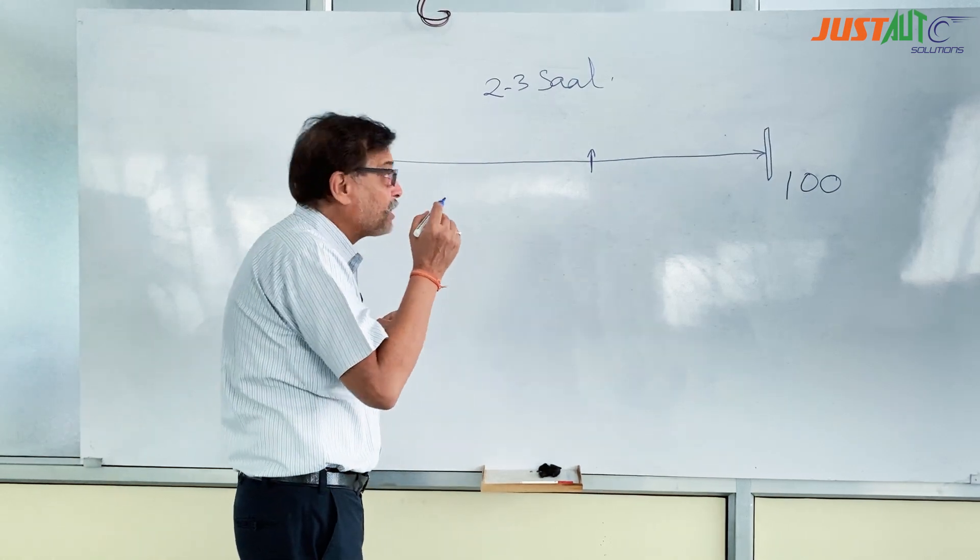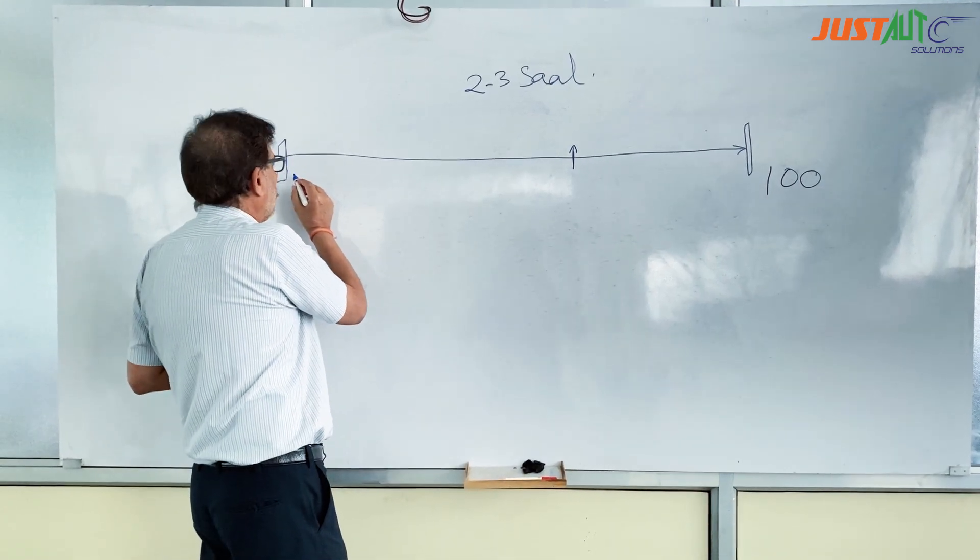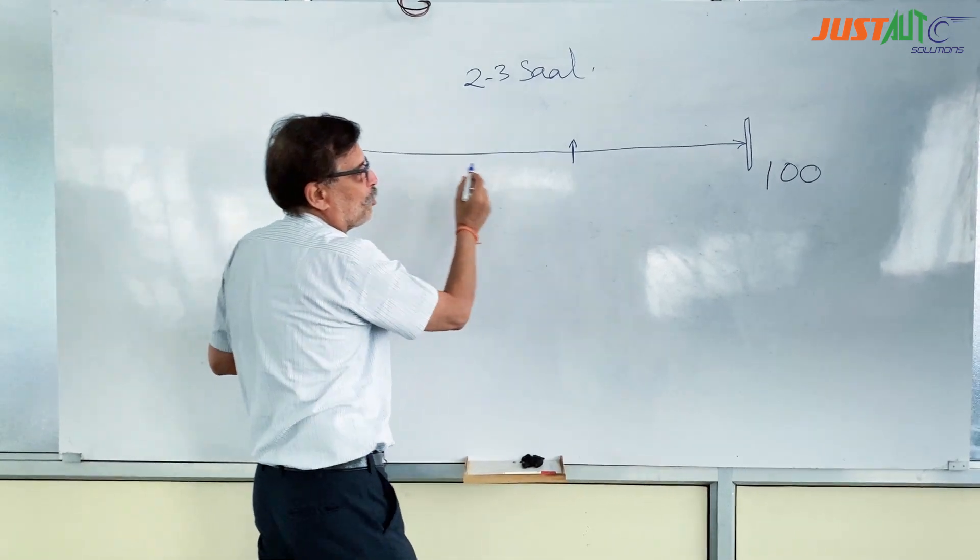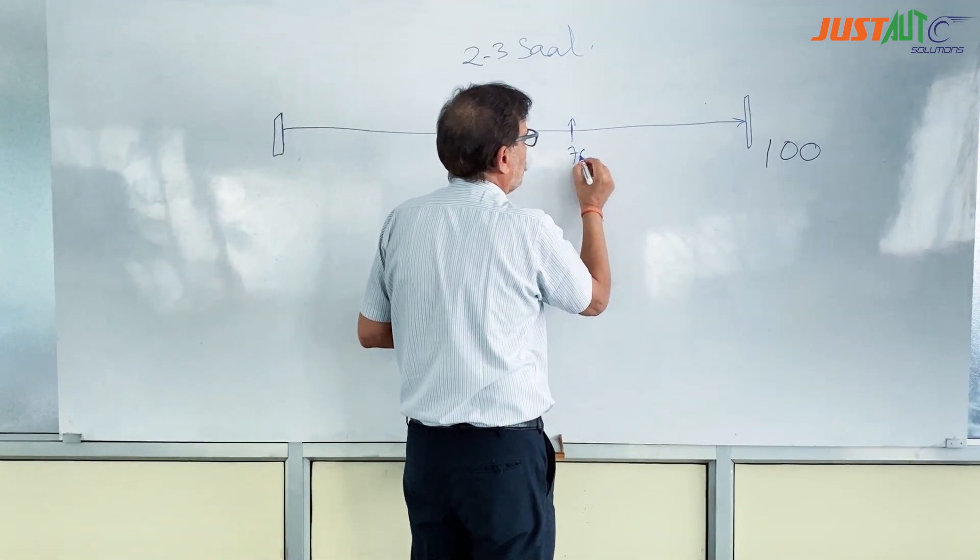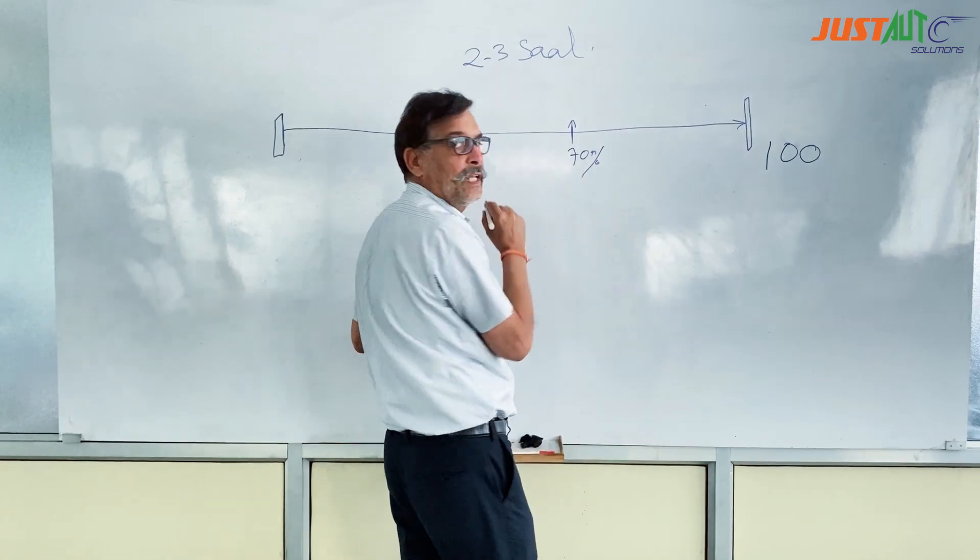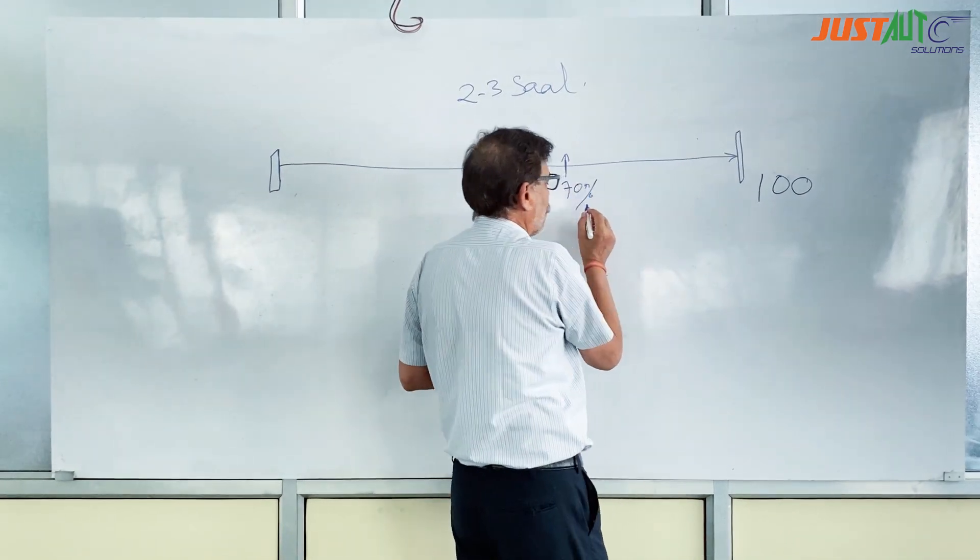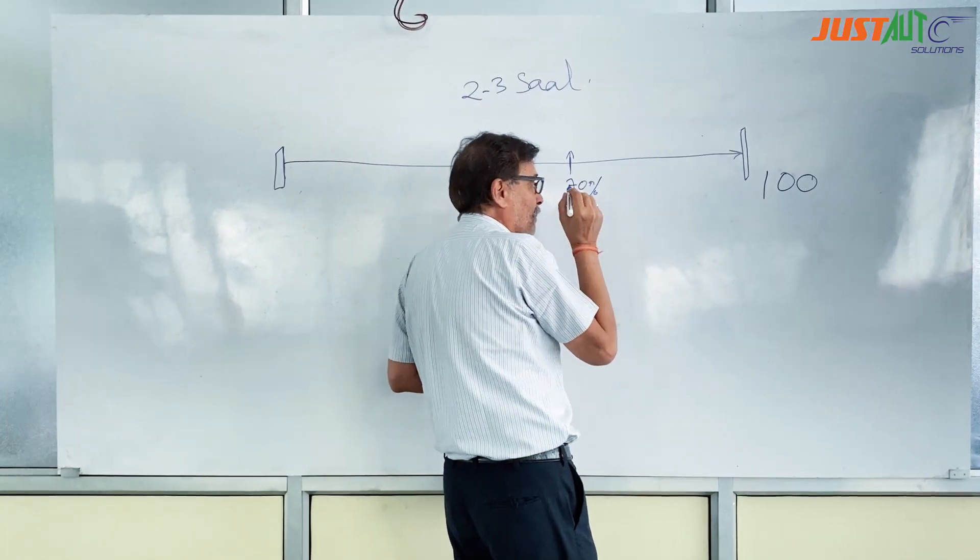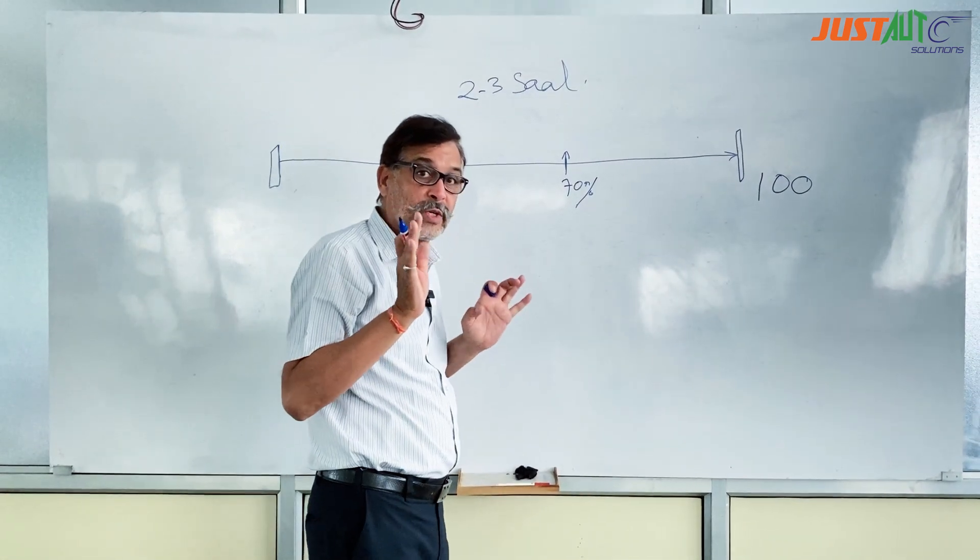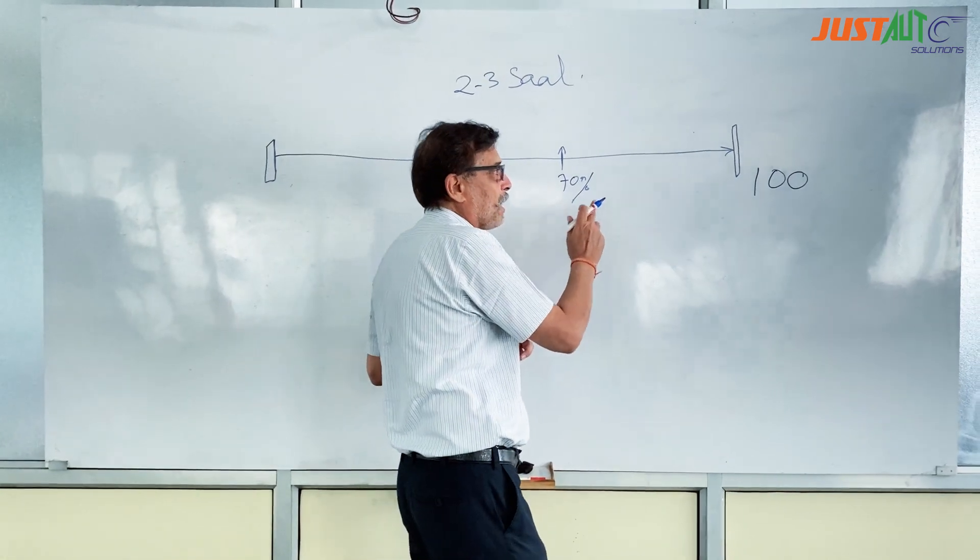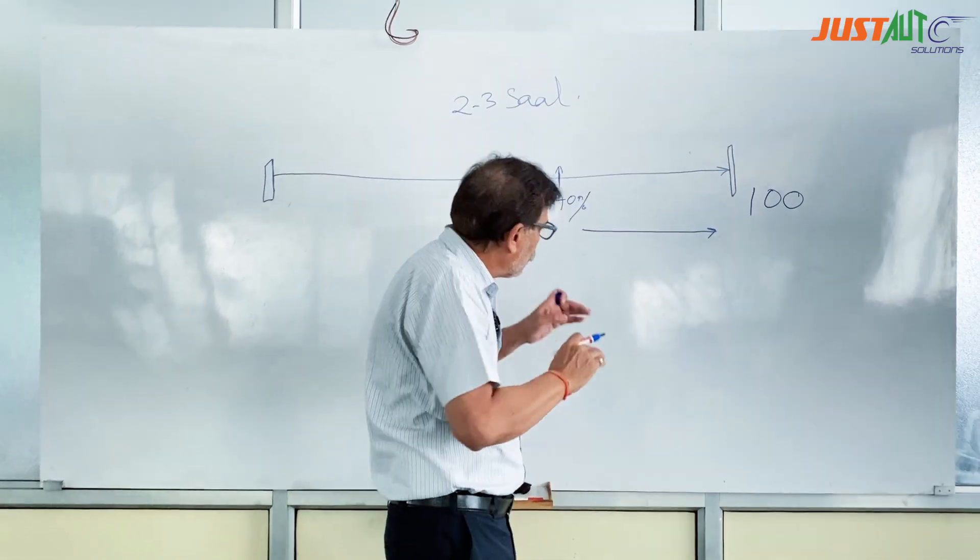When you take this training for only one month, if someone normally takes 2-3 years to reach 100 meters, you have already covered 70% of the road. This knowledge means when you start working in any workshop, you will be able to reach 100% very quickly because you have completed your foundational knowledge.